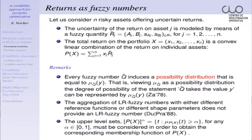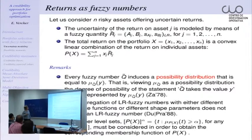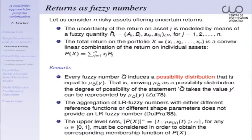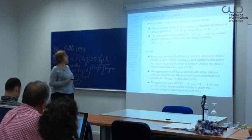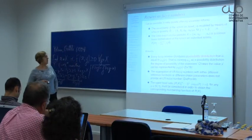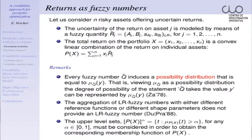In our approach, as usual in portfolio optimization, we consider n risky assets offering certain returns which are modeled by means of a fuzzy quantity, and then the total return on the portfolio is a convex linear combination of the returns on individual assets. However, if we consider different fuzzy quantities — that is, with different reference functions or different shape parameters — then the aggregation, the total return on the portfolio, does not have the property of being an LR fuzzy number, and we need to consider the alpha-cuts for every alpha to reproduce the membership function.